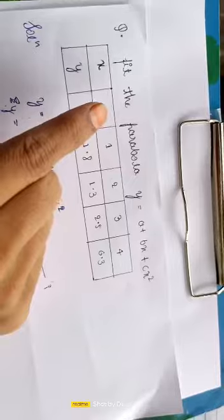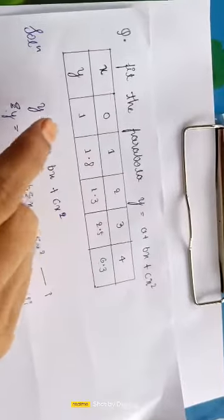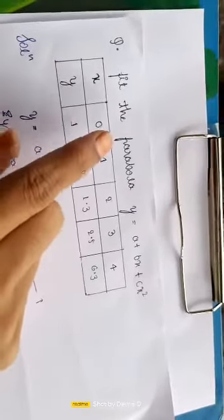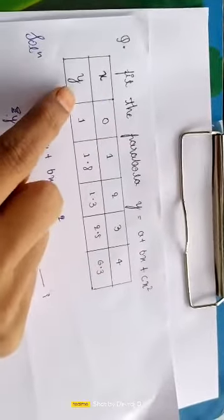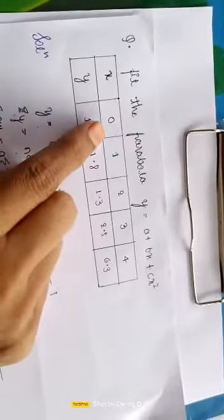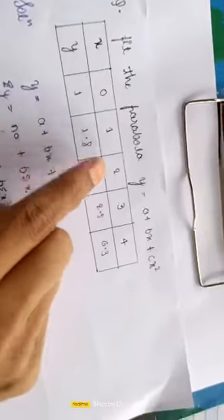Here I have taken an example on parabola. The values of x and y are: x equal to 0, 1, 2, 3, 4 and y equal to 1, 1.8, 1.3, 2.5, 6.3.